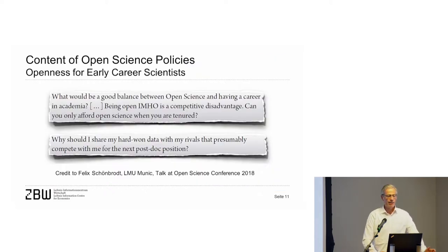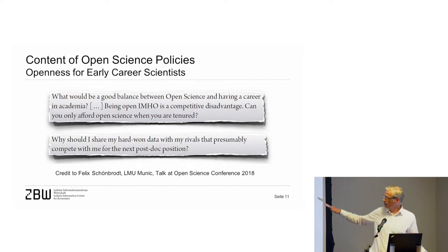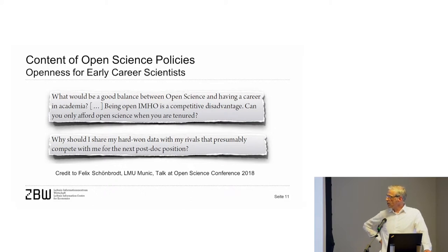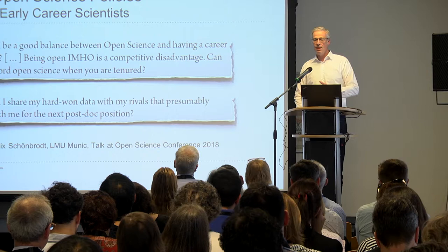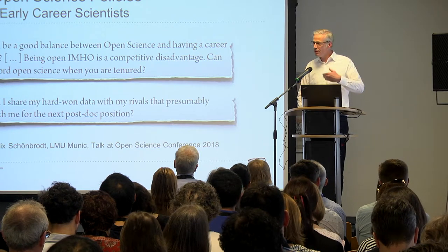A policy could also address how a research institution wants to support early career scientists. Here are two citations from early career scientists. They say: 'What would be a good balance between open science and having a career in academia? In my honest opinion, it is a competitive disadvantage. Can you only afford open science when you are tenured?' The second person says: 'Why should I share my hard-won data with my rivals that presumably compete with me for the next postdoc position?'